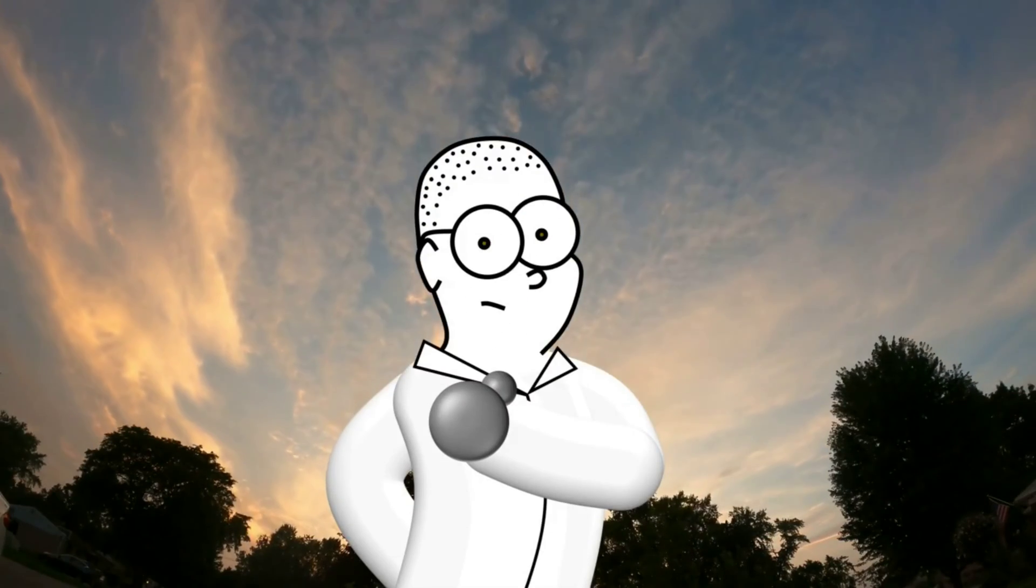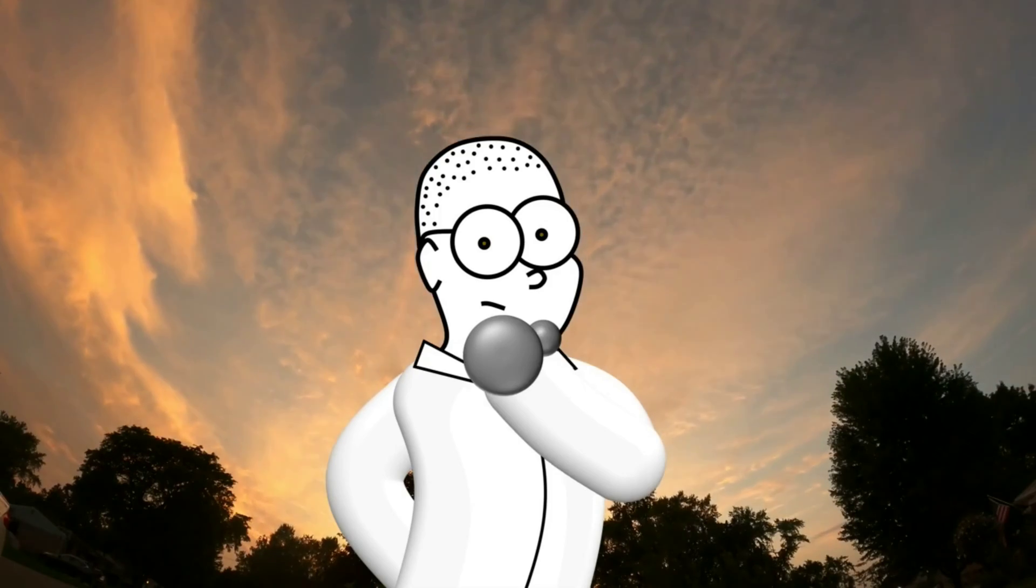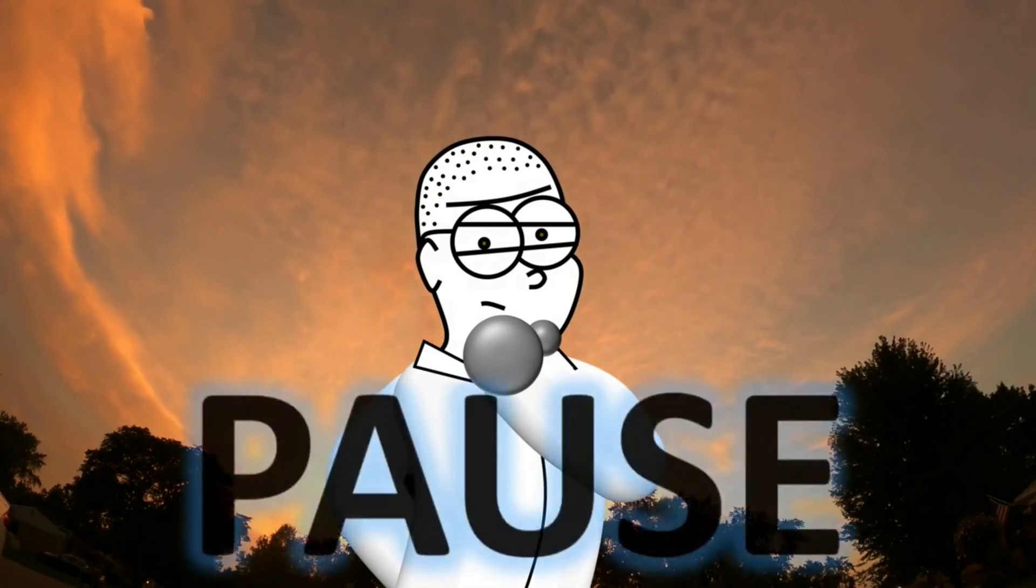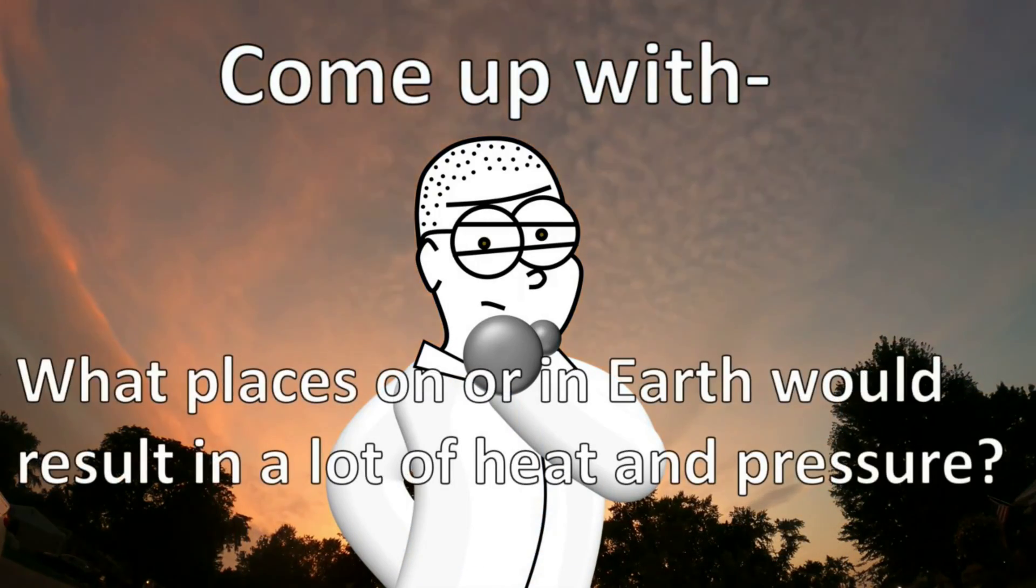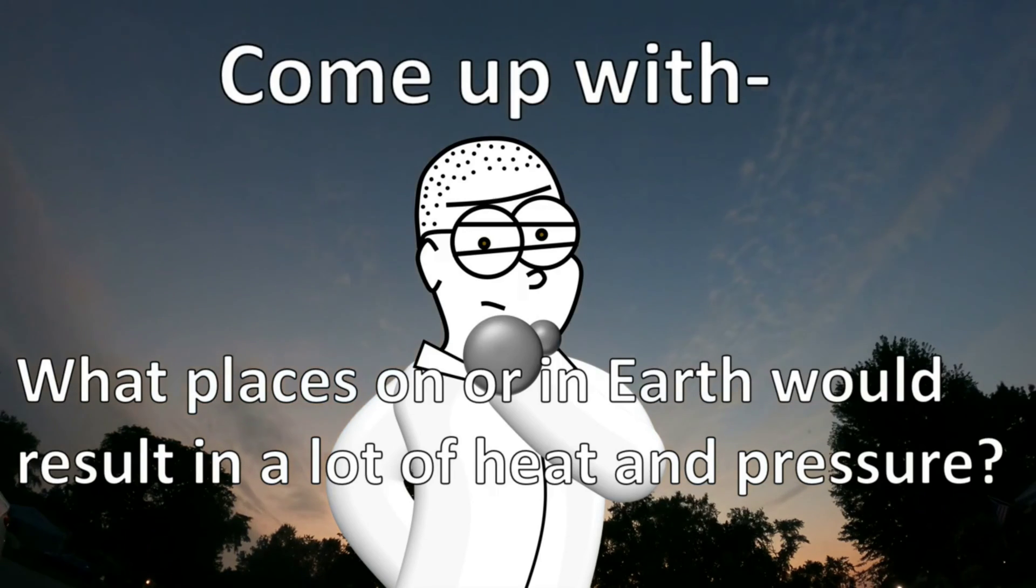So, we know that metamorphic rocks are formed when a pre-existing rock, the protolith, is exposed to heat and pressure. But where do we find these kinds of conditions on Earth? Take a moment to pause the video and see if you can come up with what places on or in Earth would result in a lot of heat and pressure. In your answer, you might have said that we'd find a lot of heat and pressure deep inside Earth. That'd be a great place to look for the conditions to create metamorphic rocks.